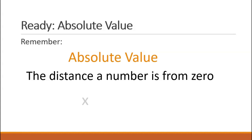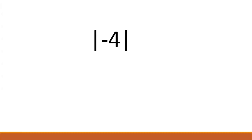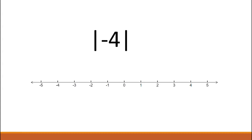The absolute value of any number x is symbolically written like this. It is often helpful to use a number line when you're thinking about absolute value. So if you want to find the absolute value of negative four, this means you want to know the distance negative four is from zero. Using the number line, you can see that the absolute value of negative four is four.